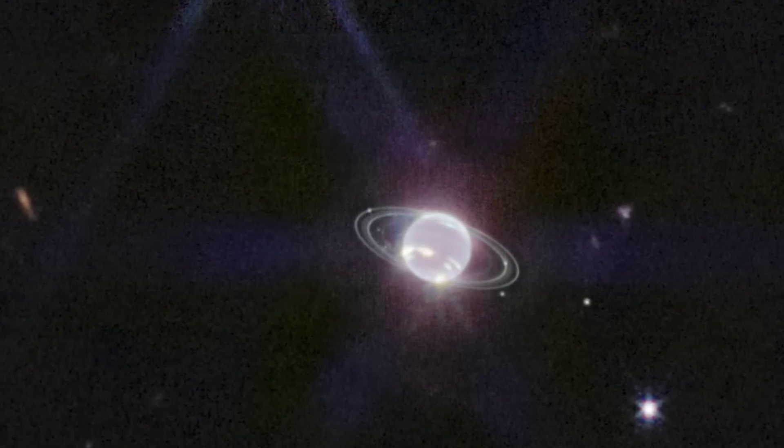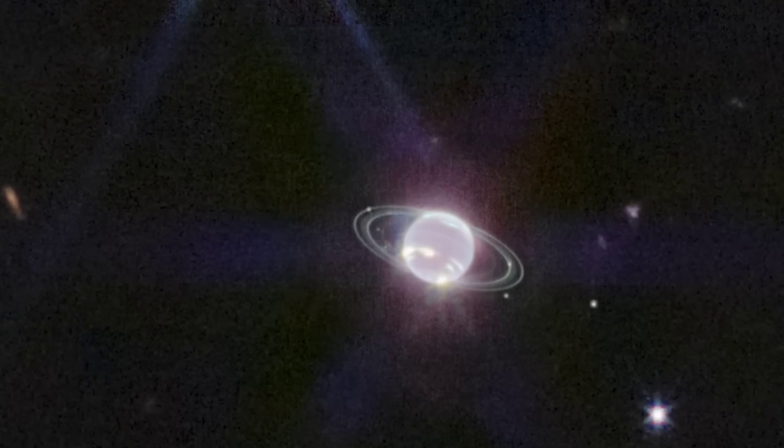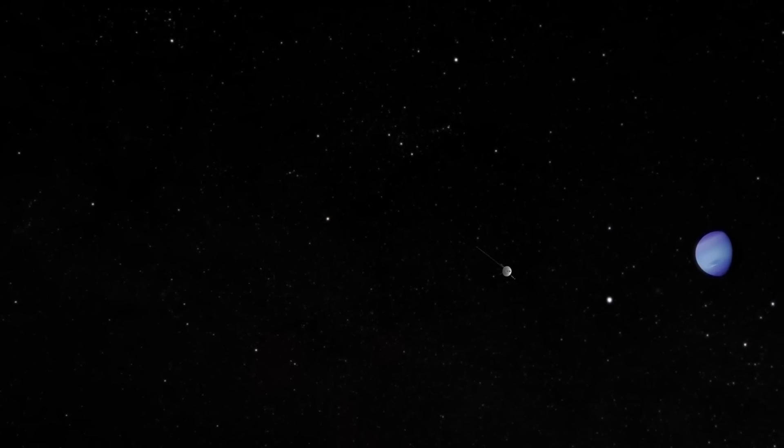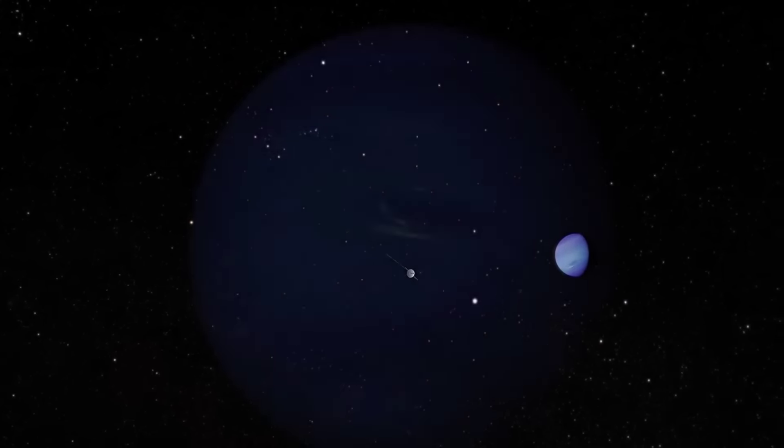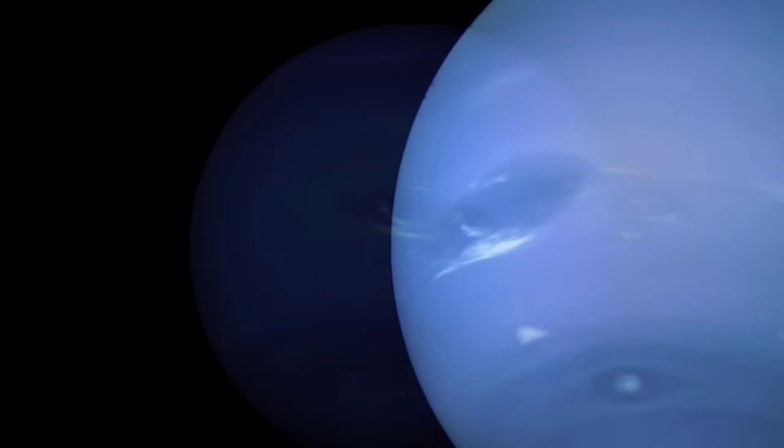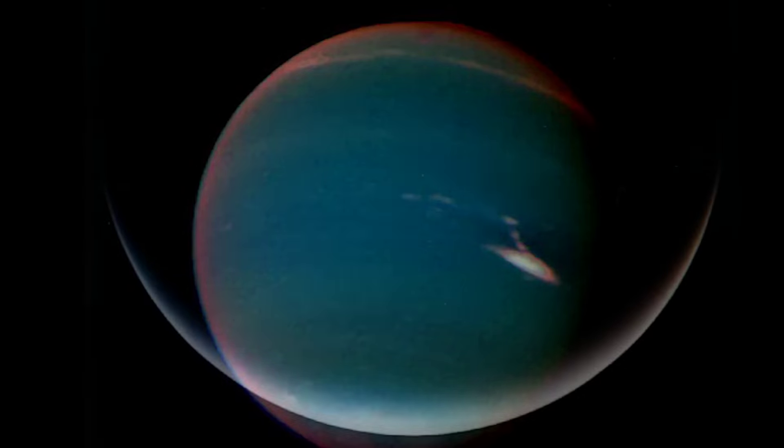Most striking in Webb's new image is the crisp view of the planet's rings, some of which have not been detected since NASA's Voyager 2 became the first spacecraft to observe Neptune during its flyby in 1989. In addition to several bright, narrow rings, the Webb image clearly shows Neptune's fainter dust bands.